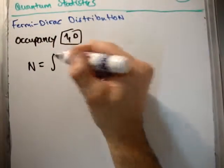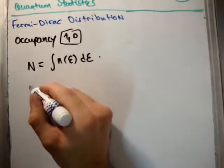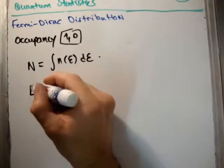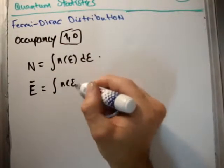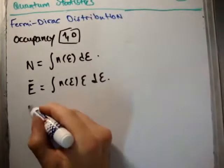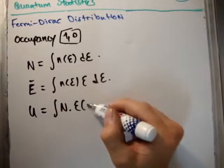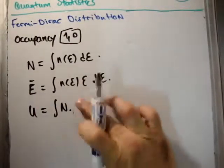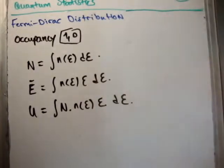To get the total number of particles, we integrate n(ε)dε. To get the average energy for a single particle, we integrate n(ε) times ε dε. To get the total energy, we have the integral of N times n(ε)ε dε.